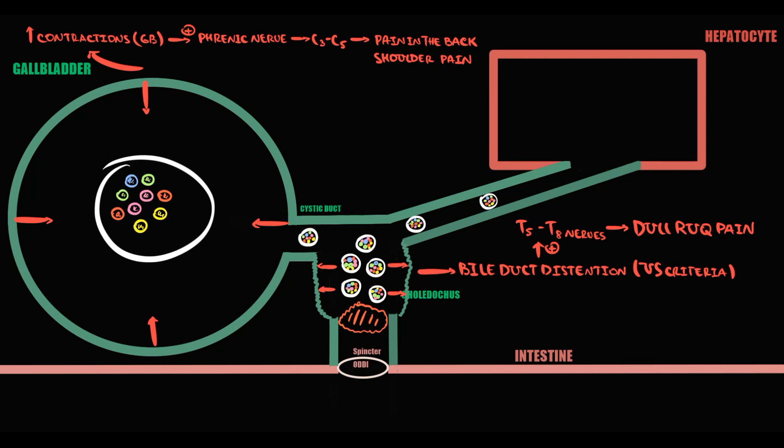Accumulation of bile in the common bile duct is called cholestasis. Bile contains a lot of bile acids and salts. Accumulation of bile acids and salts causes increasing ALP and GGT.